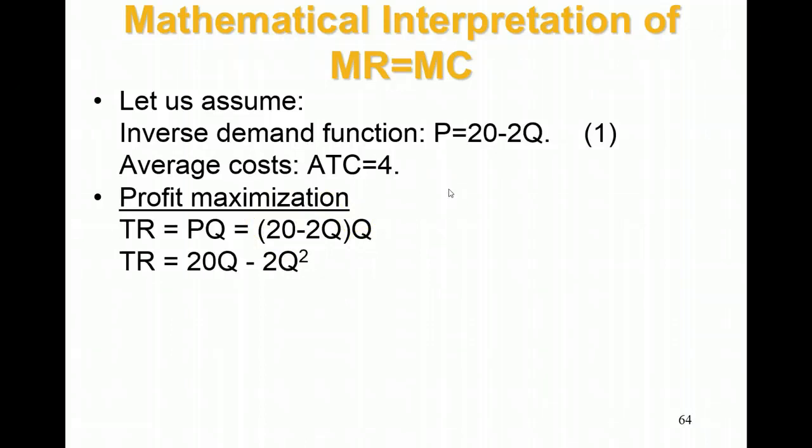Now I take the first derivative of the total revenue curve to get marginal revenue. I drop the Q, take the 2, bring it over, multiply it by 2 to get 4, and drop the exponent. This gives me my marginal revenue equation: MR equals 20 minus 4Q.